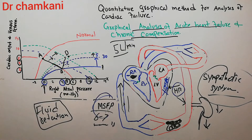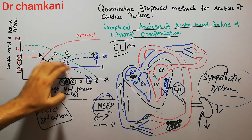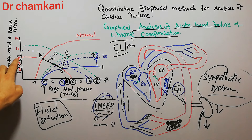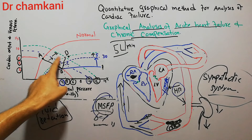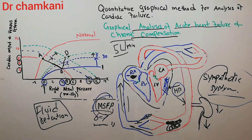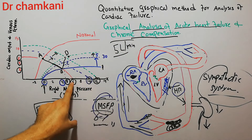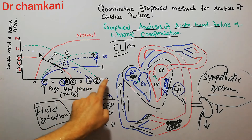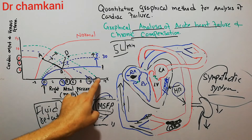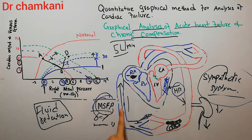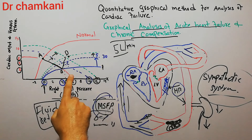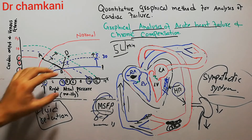Due to more fluid being accumulated in the system, the force with which blood is being pumped toward the right atrium also increases. The venous return curve has shifted rightward, and the new mean systemic filling pressure is 12 mmHg. So now the cardiac output has returned to its normal level of five liters per minute, but the right atrial pressure is high at 6 mmHg and the mean systemic filling pressure is also elevated at 12 mmHg.